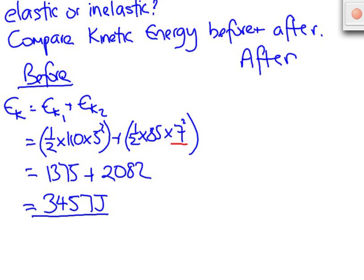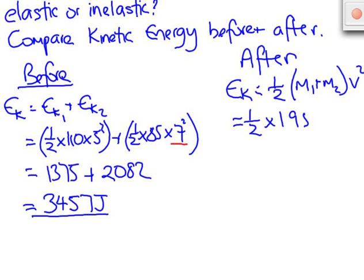Let's look now at the kinetic energy after the collision. We said in the last part of the question that the two players stuck together. So that means that the kinetic energy is one half multiplied by the sum of their masses multiplied by their combined velocity squared. That's half times 195 multiplied by 0.23 squared.